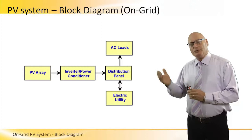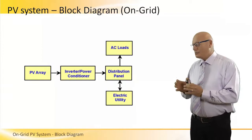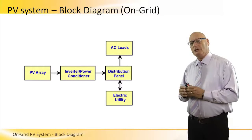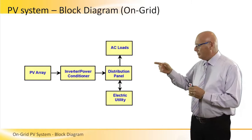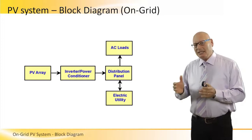From the distribution panel on the right, which receives AC, power goes to AC loads and to the electric utility — the grid. The AC loads are separate from the grid; these are specific loads that we select to be energized directly from the inverter, nothing to do with the grid. The reason there are bi-directional arrows between the electric utility and the distribution panel is because the inverter needs AC power coming from the grid in order to operate.